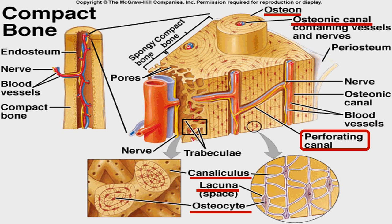The microscopic structural unit of compact bone is called an osteon, or Haversian system. Each osteon is composed of concentric rings of calcified matrix called lamellae. Running down the center of each osteon is the central canal, or Haversian canal, which contains blood vessels, nerves, and lymphatic vessels. These vessels branch off through perforating canals known as Volkmann's canals. Bone cells known as osteocytes are located in spaces called lacunae, found at the borders of adjacent lamellae. Osteocytes communicate and exchange nutrients and waste through canaliculi.